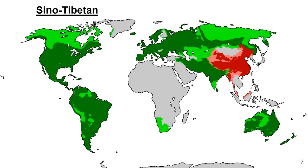Sino-Tibetan: the red on the map is where the language is spoken the most, and the lime green is where it's spoken the least. A language already part of Sino-Tibetan is Mandarin, and Mandarin's hearth is in northern China. Mandarin is the most popular language in the world, and some people use Mandarin as a lingua franca, so it's no surprise it's spoken around the world. China is very densely populated, so there's going to be some very dark red on this map.